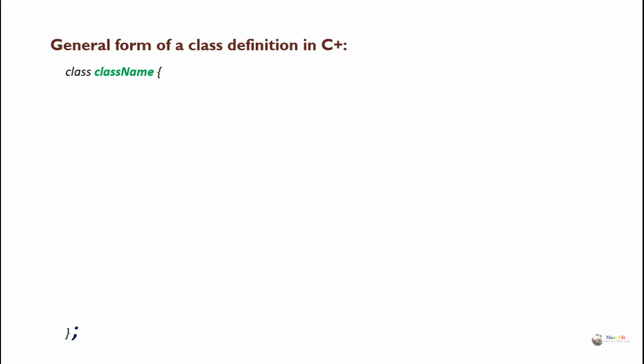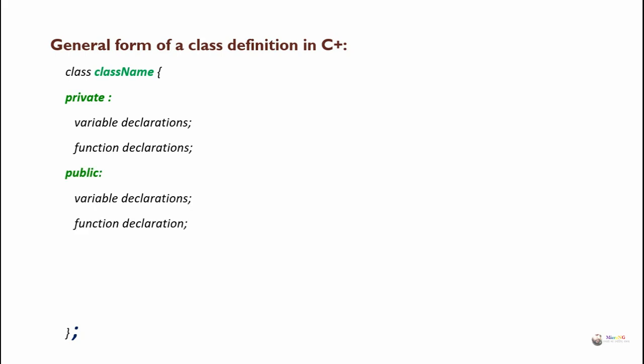Inside the class we can have three different access specifiers: private, public, and protected. In each of these blocks we can have a set of variable declarations and function declarations, and these sections can be repeated multiple times. So we have private, public, and protected as three access specifiers, and in each block we can have a set of variables and function declarations.